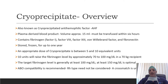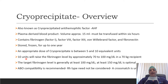Now coming to another component — cryoprecipitate. It is a plasma-derived blood product with a volume of approximately 15 ml per unit, and it must be transfused within 6 hours of preparation. It contains fibrinogen (factor I), factor VIII, factor XIII, and von Willebrand factor, and can be stored frozen for up to 1 year. An appropriate dose is between 5 and 10 units. Ten units will raise the fibrinogen level by approximately 70 to 100 mg% in a 70 kg recipient. The target fibrinogen level is generally at least 100 mg%, but 150 mg% is optimal.